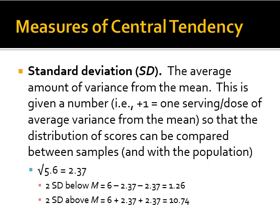That 5.6 doesn't mean much by itself because you still cannot compare a score with a set of scores and understand what it means. To do this, we need standard deviation. Standard deviation is the average amount of variance from the mean. For example, plus one standard deviation is one serving of average variance from the mean. If we take the square root of 5.6, this gives us 2.37 — that is our standard deviation.